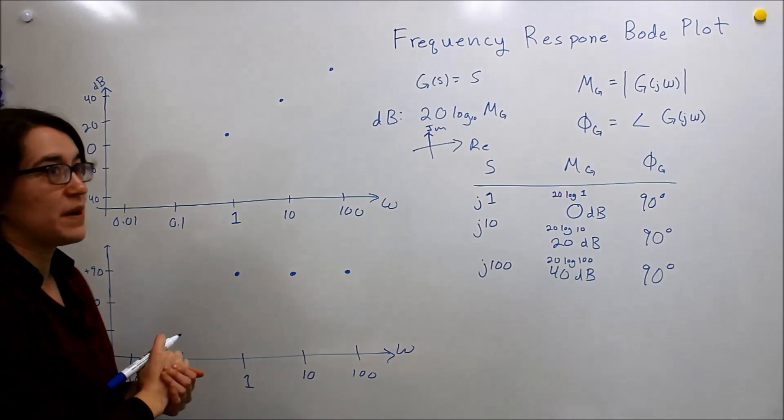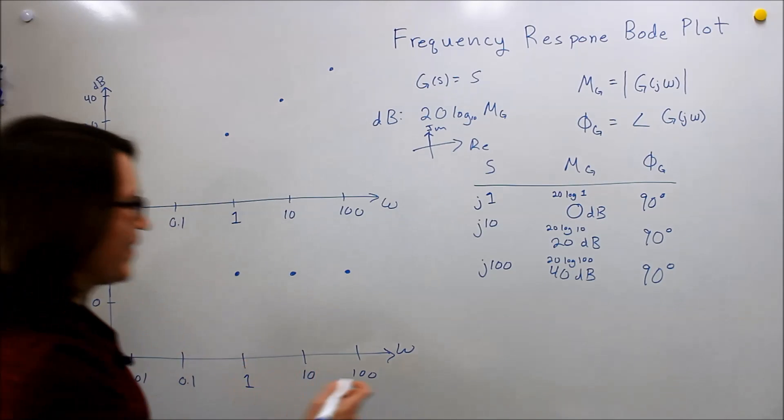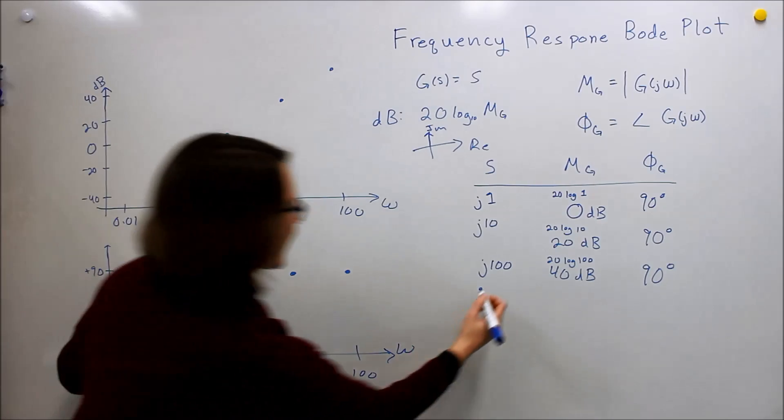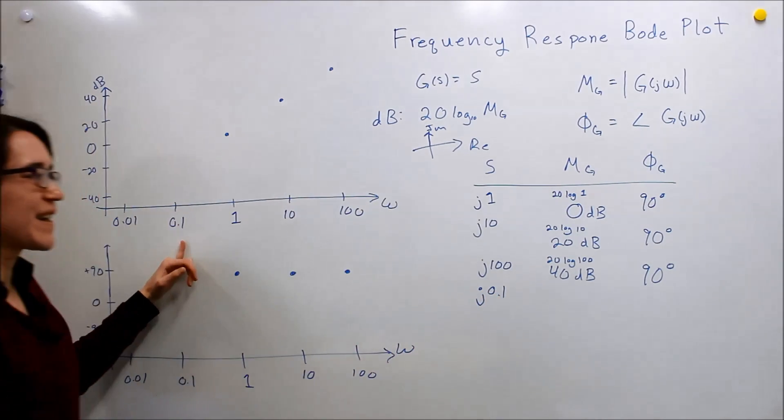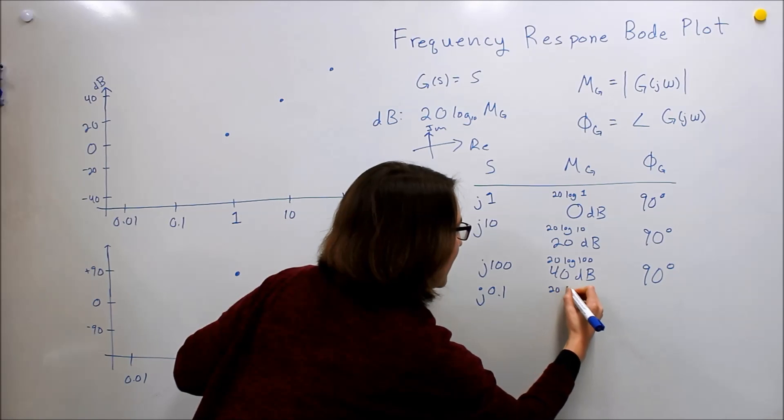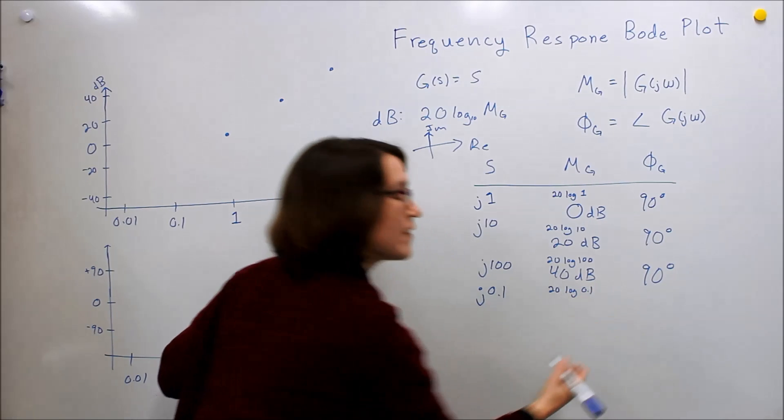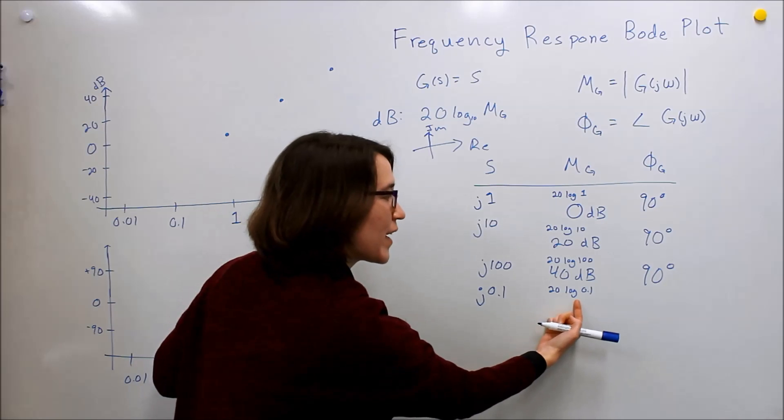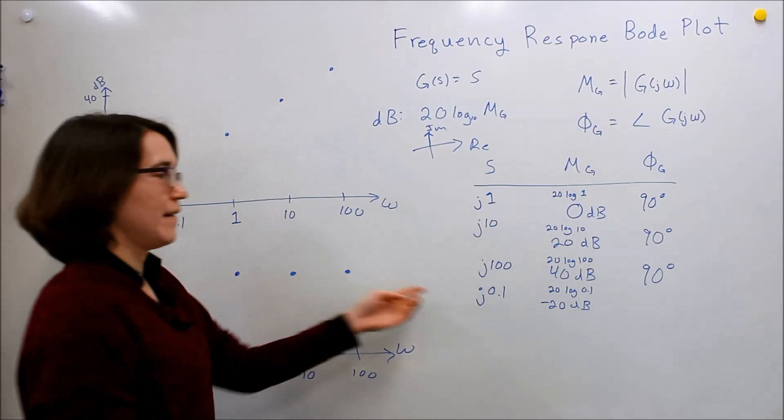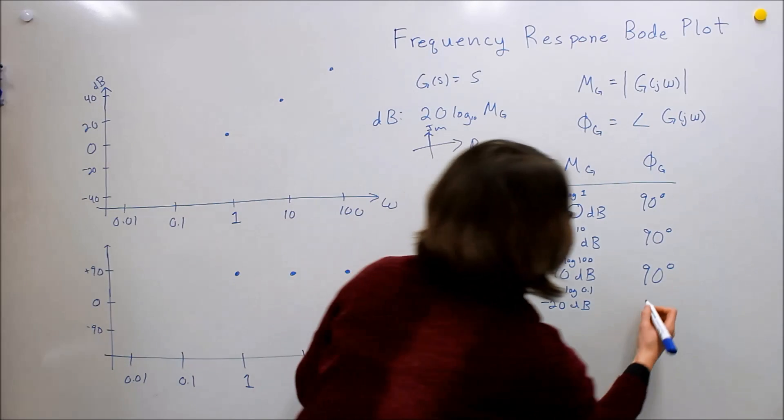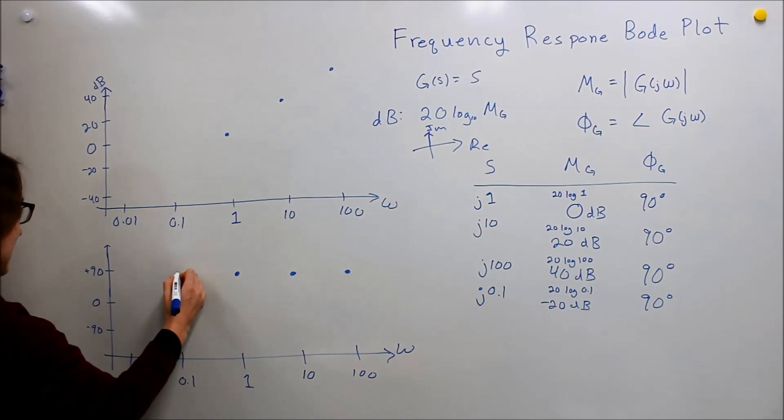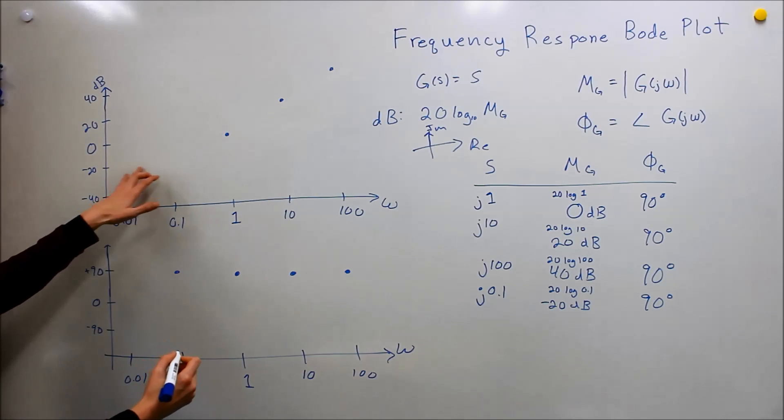You may be sensing a trend. Let's do 0.1 real quick. We put that into our log, so we get 20 log of 0.1, which is negative 1 times 20, so we get negative 20 dB. Our angle is still the same at 90 degrees. We plot that at 90 and negative 20.